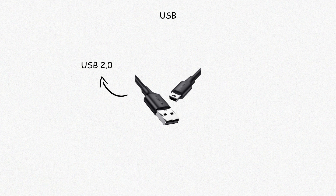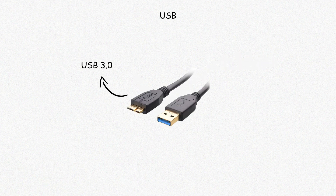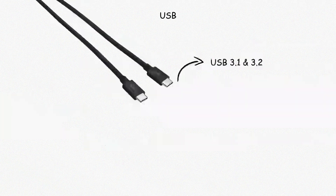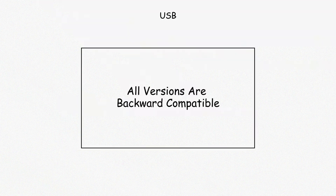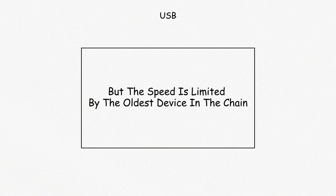USB 2.0 offers speeds up to 480 megabits per second. USB 3.0 increases that to 5 gigabits per second and includes a blue insert. USB 3.1 and 3.2 support 10 and 20 gigabits per second respectively. All versions are backward compatible, but the speed is limited by the oldest device in the chain.